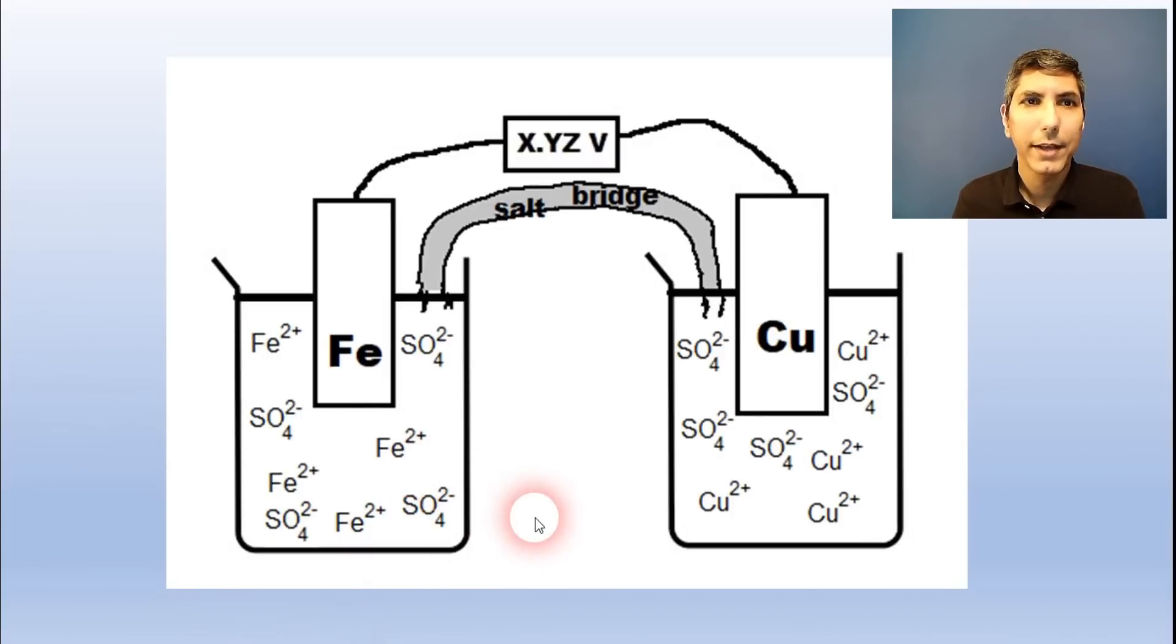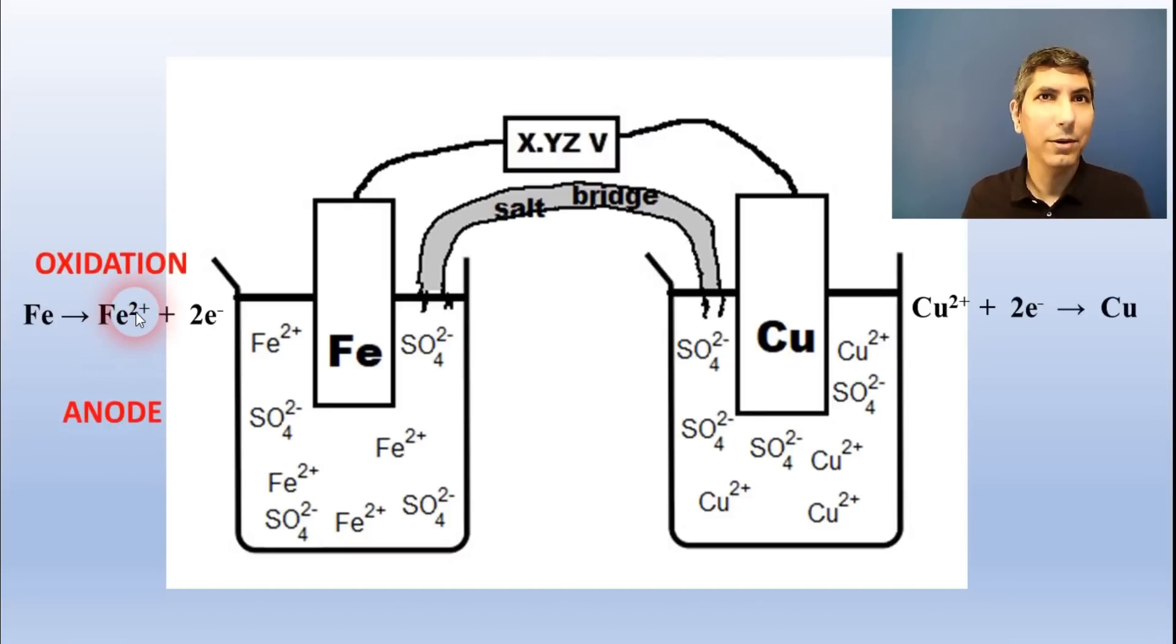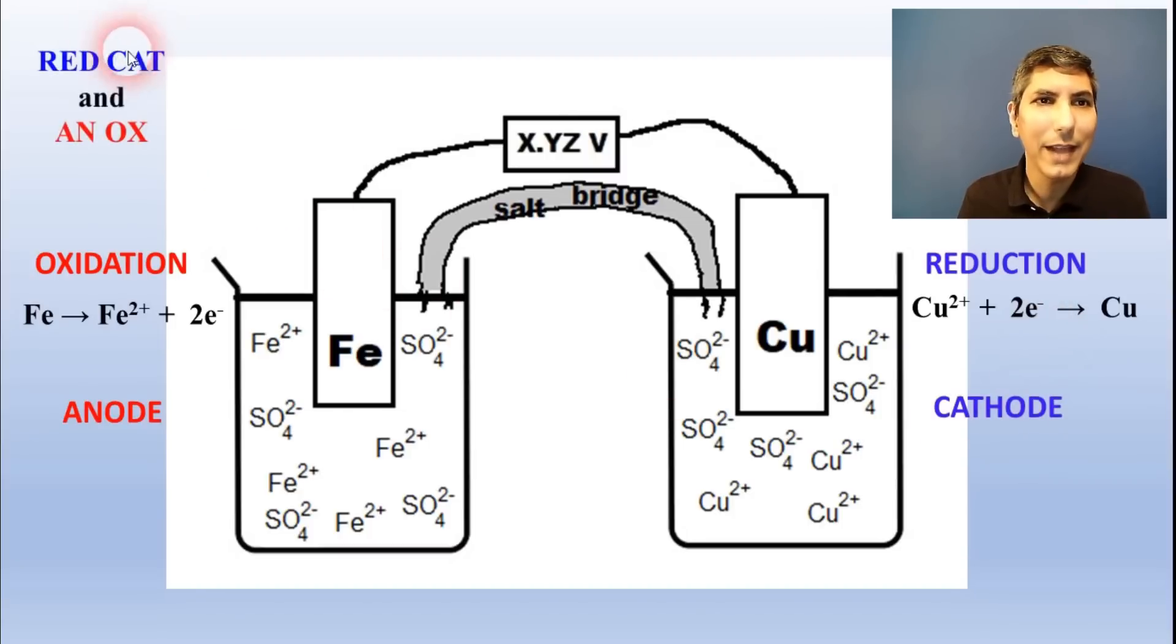Each side of the cell has one specific half reaction that's taking place. The side where oxidation takes place is called the anode. And the side where reduction takes place is called the cathode. Red cat and an ox. Remember that the electrons flow through the wire from the anode to the cathode, like AC.